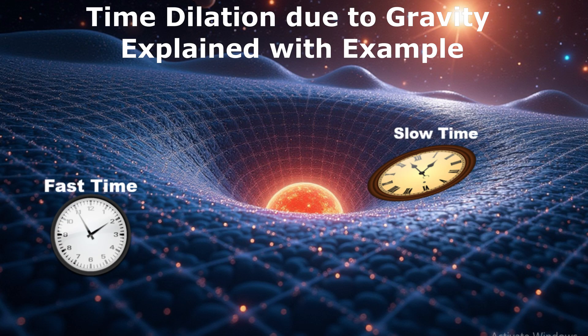Imagine two identical clocks. One is close to a massive planet like in the deep part of the dent and the other is far from it like in the flatter part of the fabric. Because the massive planet curves space-time more near it, time moves more slowly there.